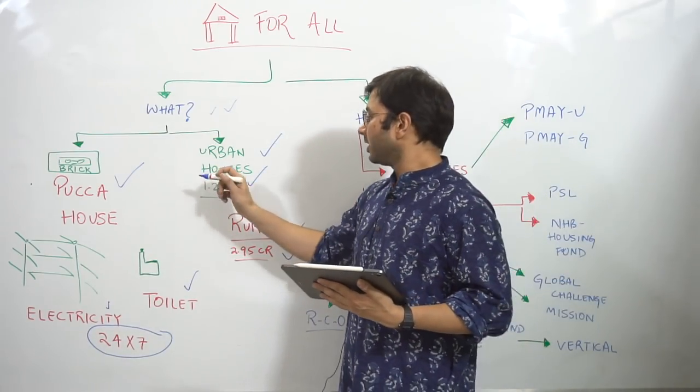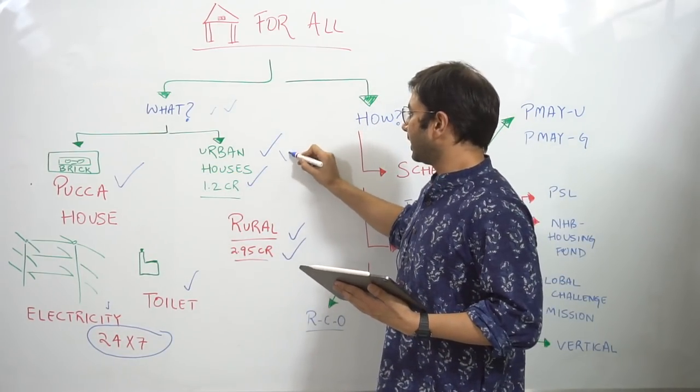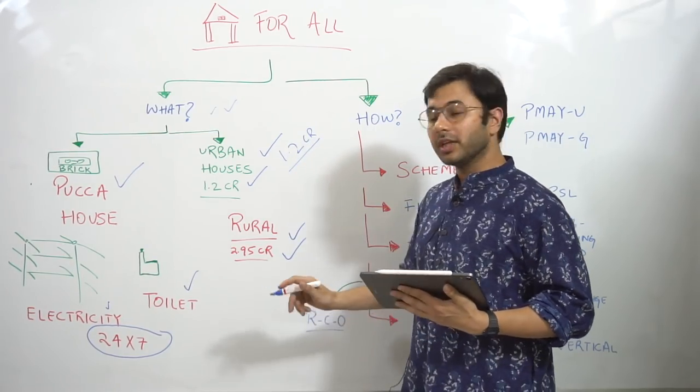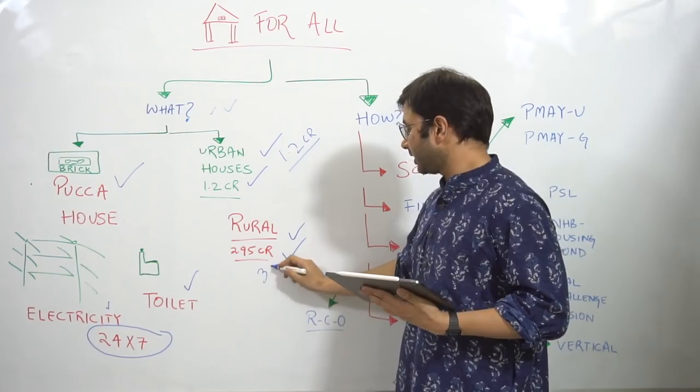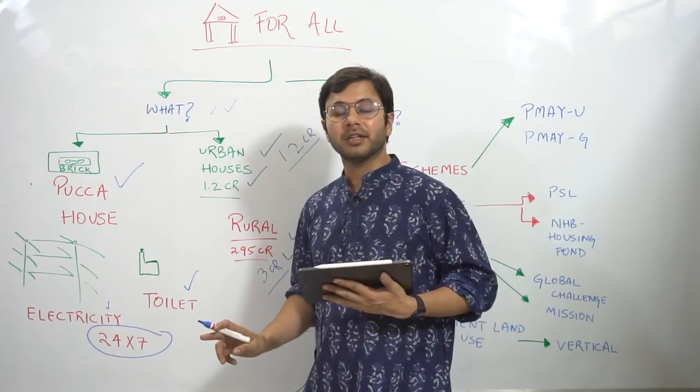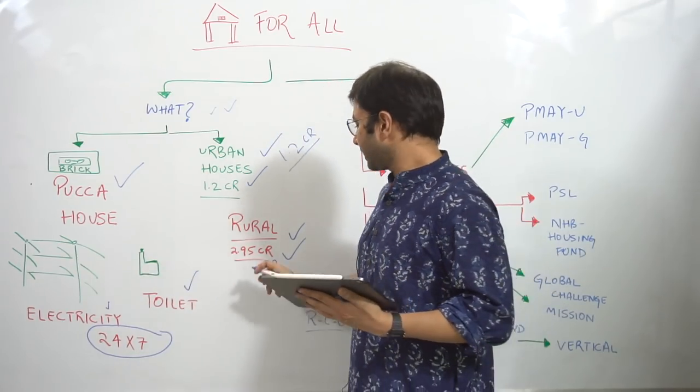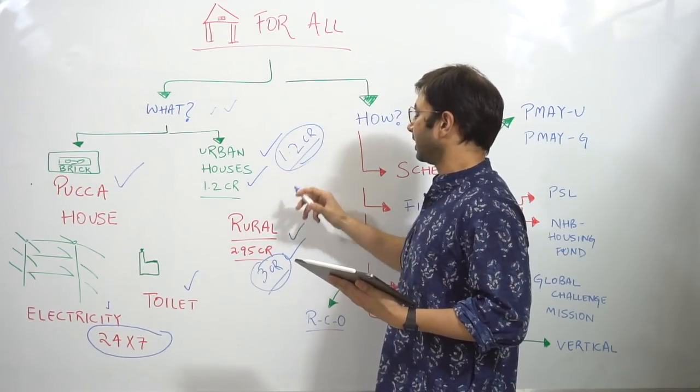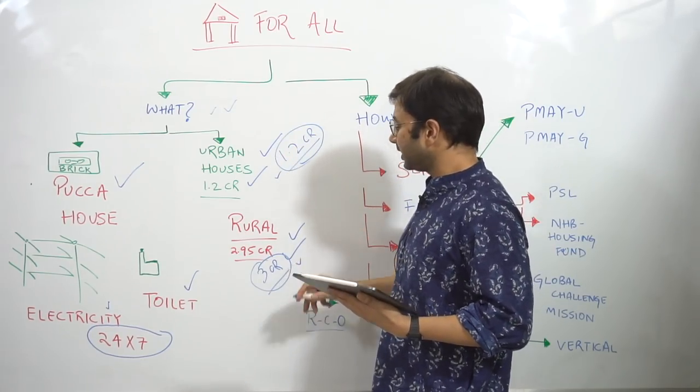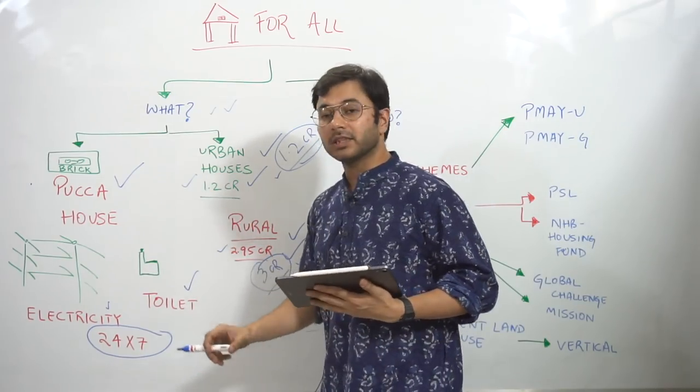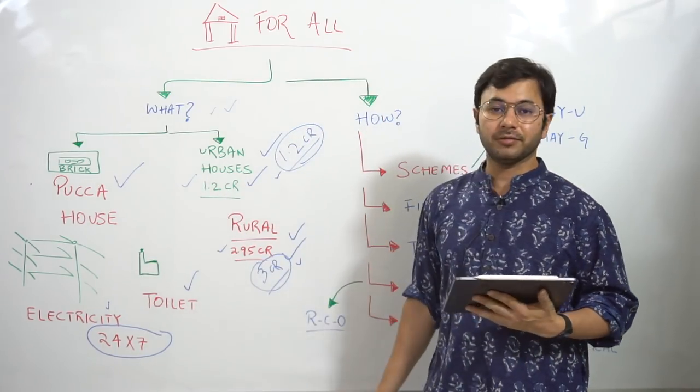Now the interesting thing here is a little confusing. I don't know why the government did it. The shortfall as per the government in urban areas is 1.2 crore. But in rural areas, the shortfall is 3 crore. So I don't know why the government has reduced the target by 5 lakh. But in any case, this is where a question lies. The shortfall is 1.2 and 3 crore, whereas the target with respect to urban and rural areas is 1.2 crore and 2.95 crore.